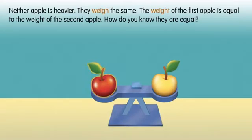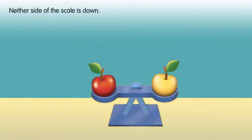The weight of the first apple is equal to the weight of the second apple. How do you know they are equal? Neither side of the scale is down.